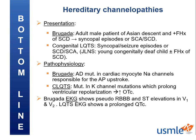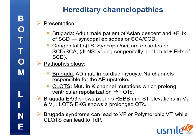On EKG in Brugada syndrome, you'll see a pseudo-right bundle branch block and ST elevations in V1 and V2. In congenital long QT syndrome, the EKG shows a prolonged QTc, usually larger than 3 large squares and greater than 450 ms as a general rule. Brugada syndrome can lead to V-fib or polymorphic V-tach, while congenital long QT syndrome — or anything else that causes a prolonged QT interval — can specifically lead to torsades de pointes.